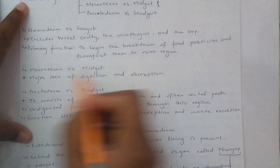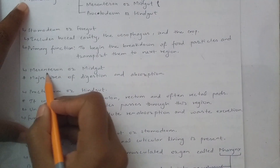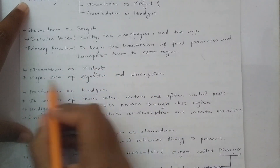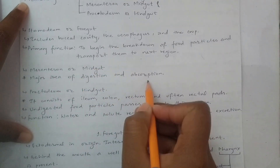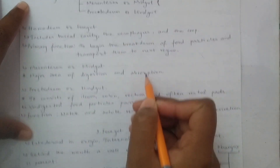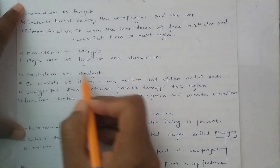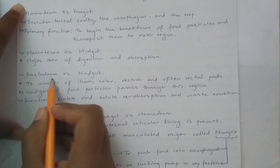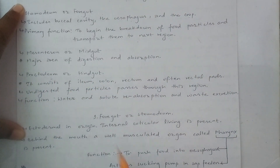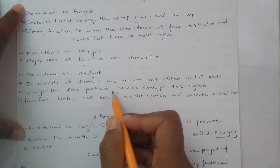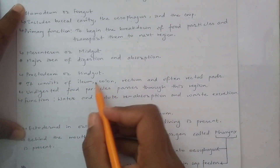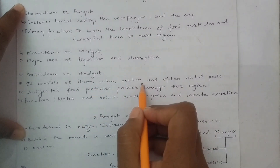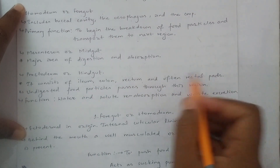Next, we have mesenterone or midgut. Mesenterone or midgut is a major area of digestion and absorption. In the third position, we have hindgut or proctodium. In the hindgut, we have ileum, colon, and rectum.